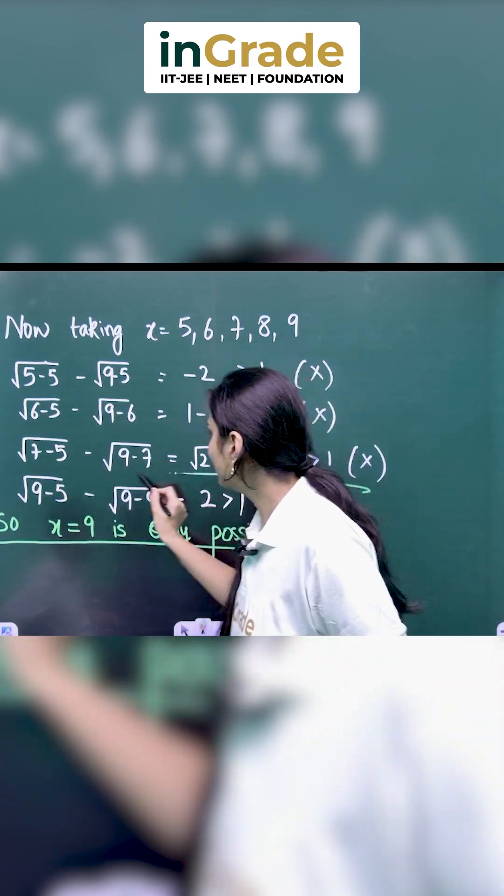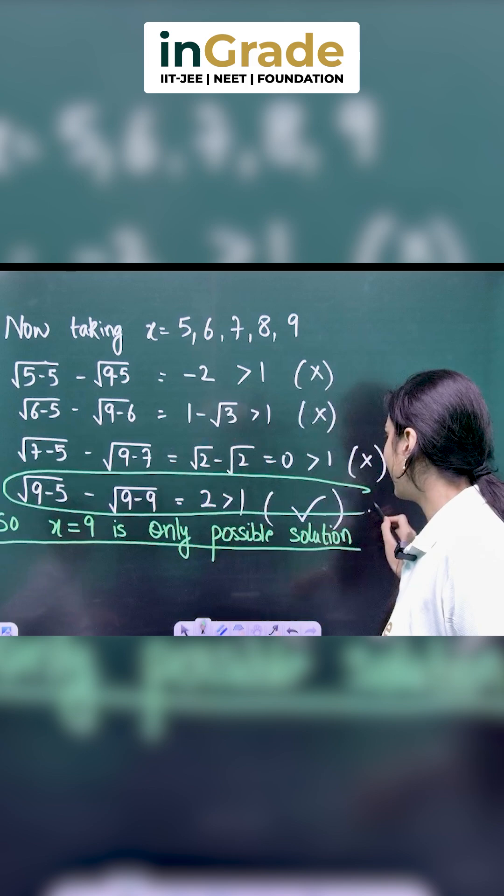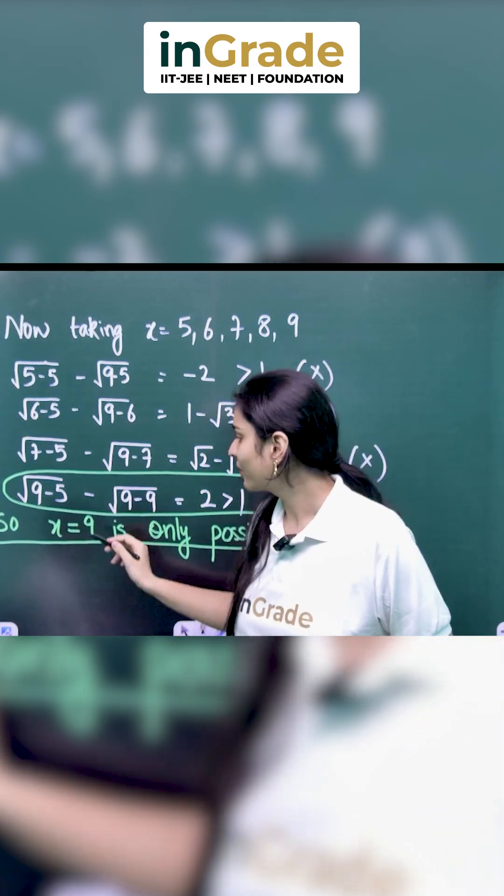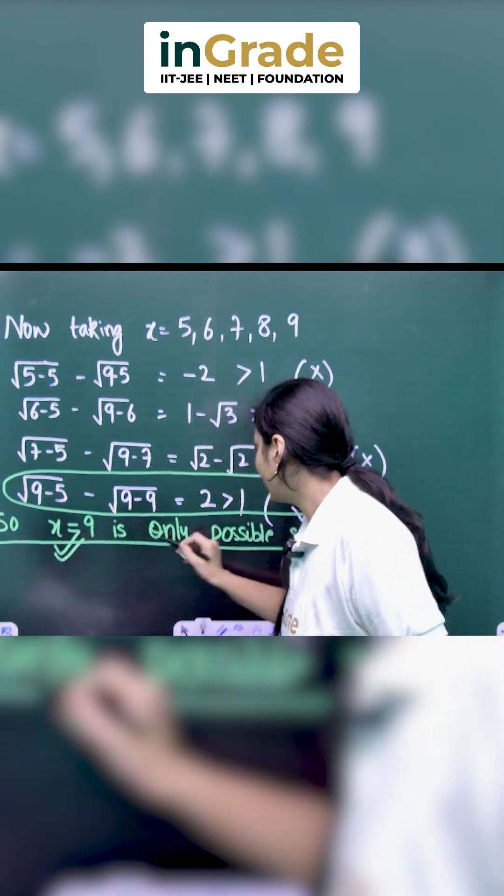we saw that only 9 is the number which satisfies our given inequalities. So, x equal to 9 is the only possible solution.